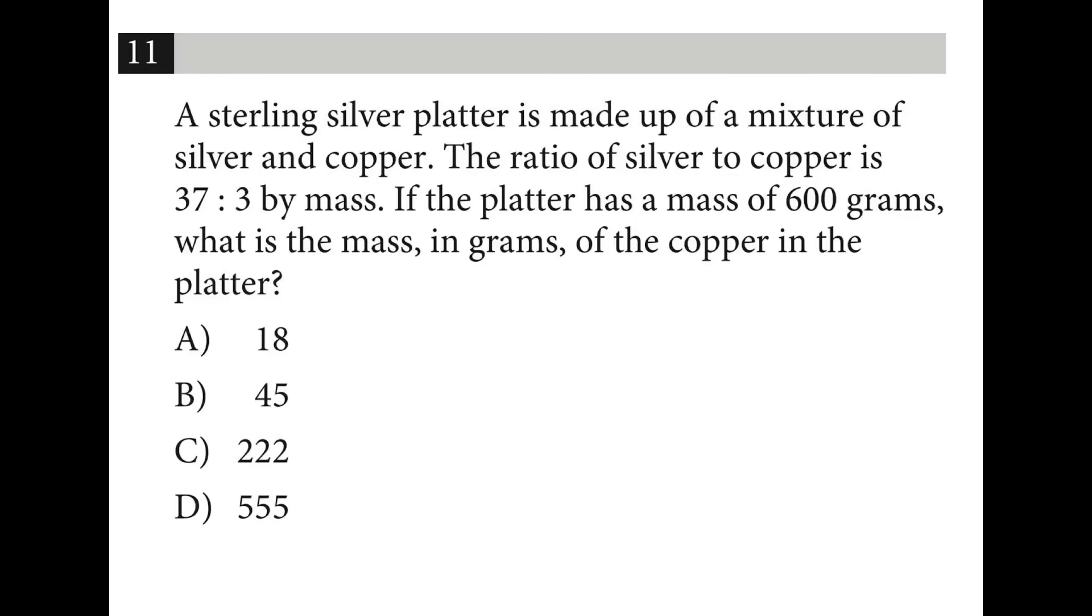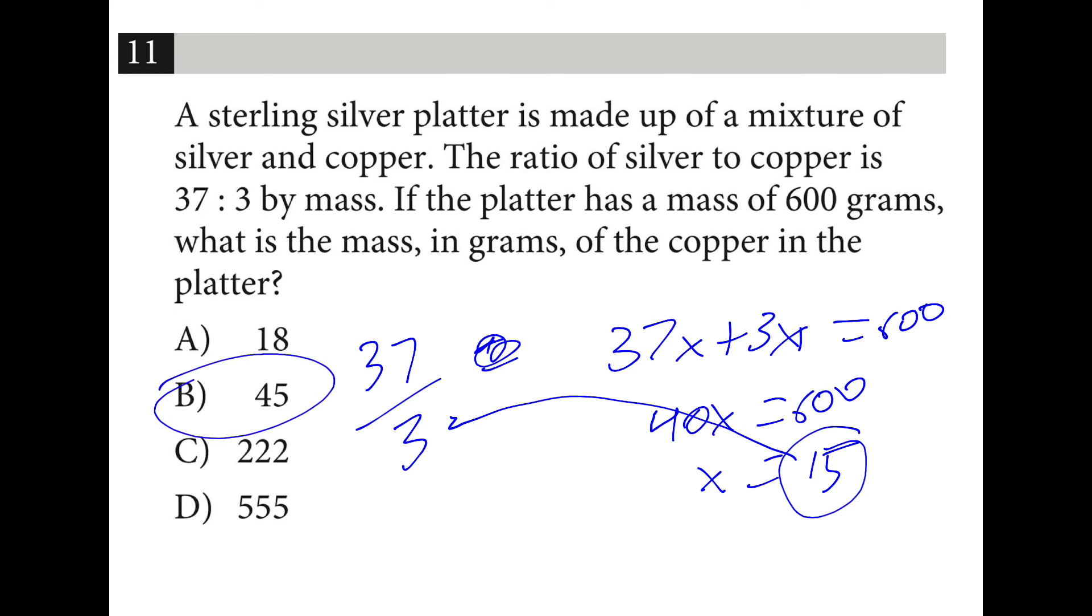The ratio of silver to copper is 37 to 3, and we know the 600 grams of mass. So let's call this 37x plus 3x is equal to 600. So 40x is equal to 600, or x is equal to 15. I want to know how much copper there was, so I'm going to plug that in for the 3, and the answer is 45.